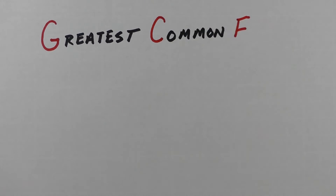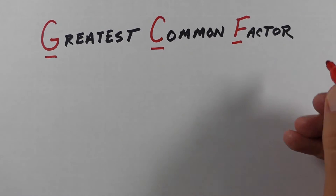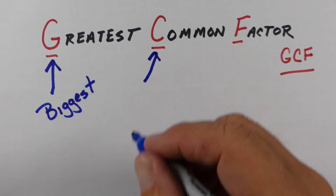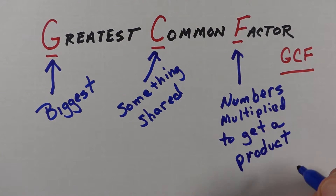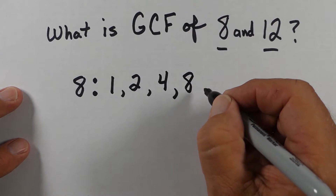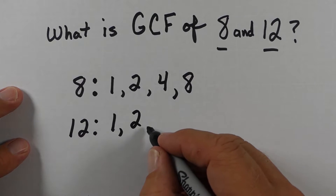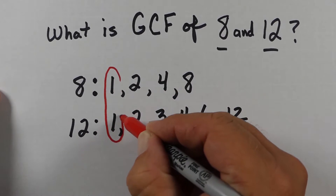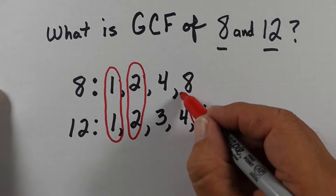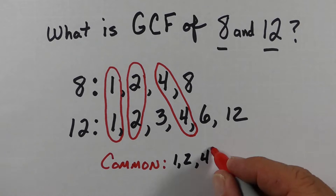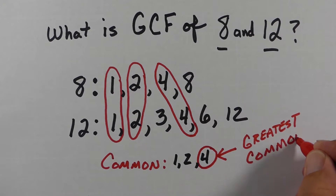Let's look at greatest common factor now. It's made up of three words: greatest, common, and factor. Greatest basically just means the biggest. Common is something we share, and a factor is a number we multiply together to get a product. So let's find the greatest common factor of eight and twelve. We find all the factors of eight — one times eight, two times four — so those are four factors. For twelve: one, two, three, four, six, and twelve. If we circle the ones they have in common, we have one, two, and four. The biggest of those three common factors is four, so four is our greatest common factor.